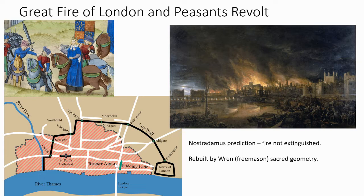Sir Christopher Wren was a Freemason, and they say the City of London is mapped out according to sacred geometry.